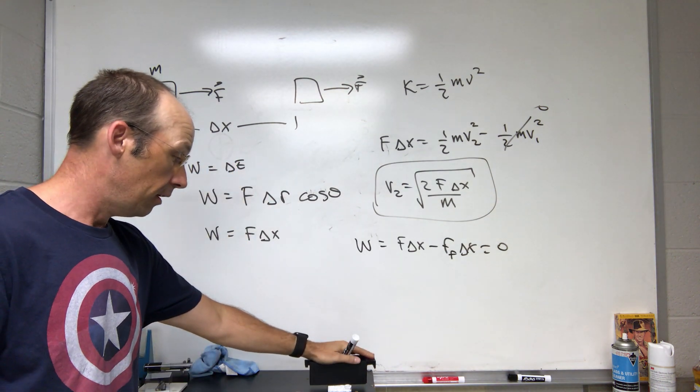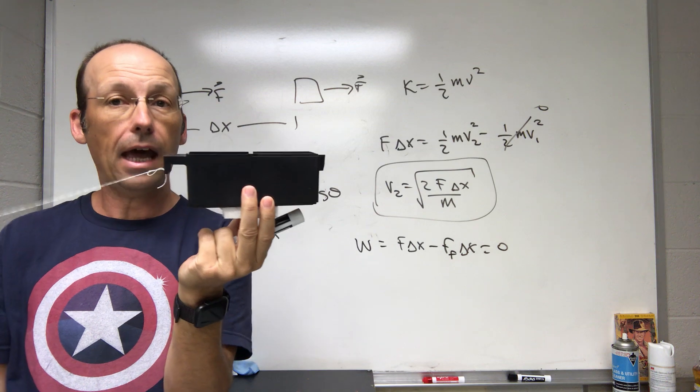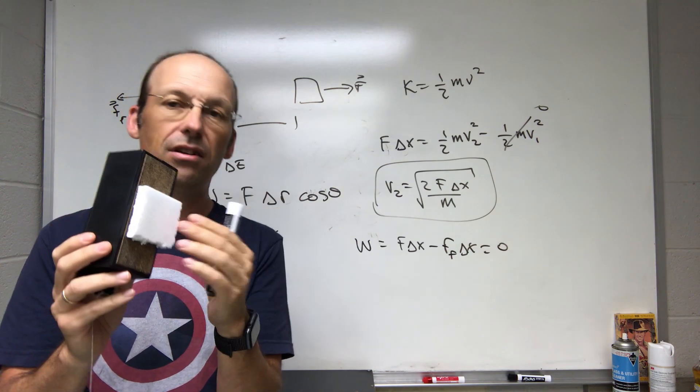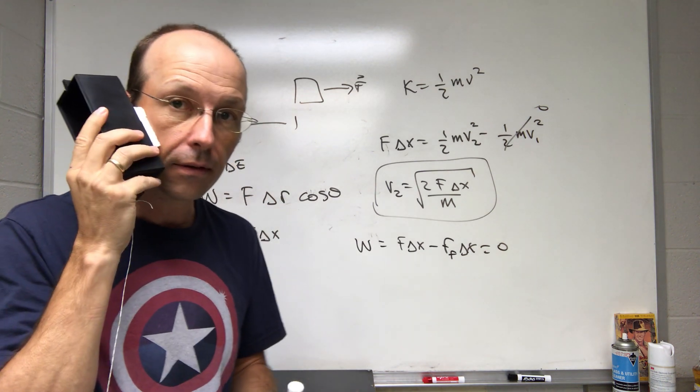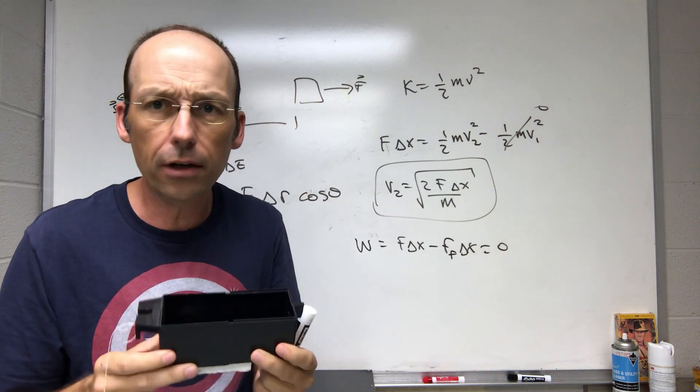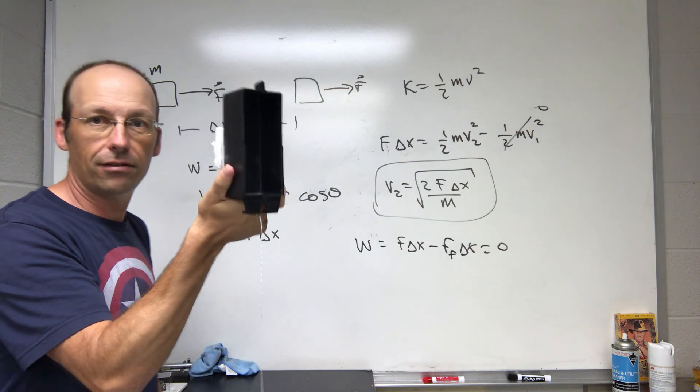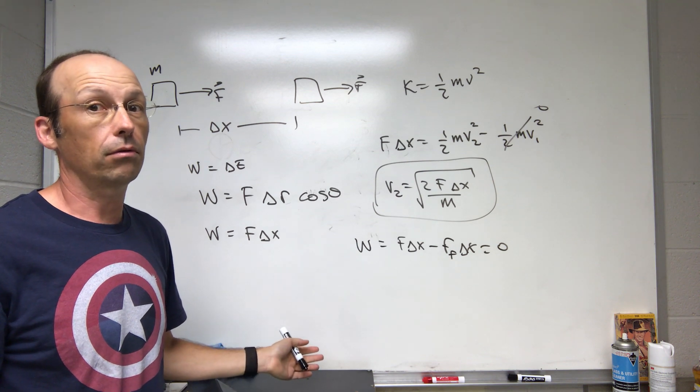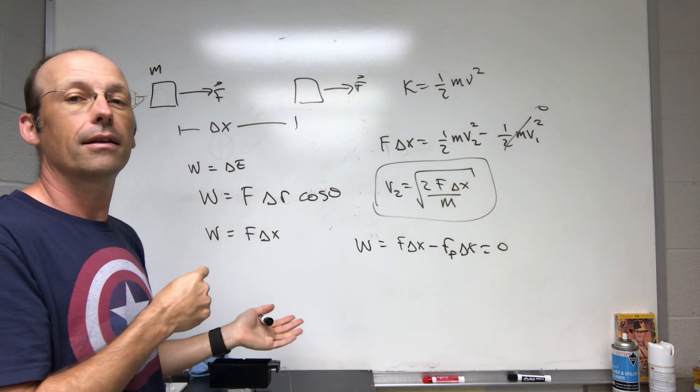If we consider the system consisting of the block and the table, as I pull it along it does have no change in kinetic energy. However, as you rub this, it gets a little bit warm, so this has extra thermal energy too. So where did the thermal energy come from? If this plus this does no work and there's no change in kinetic energy, but this increases in temperature and the table increases in temperature, where did that come from? How do you make the work-energy principle work here? That's the mystery.